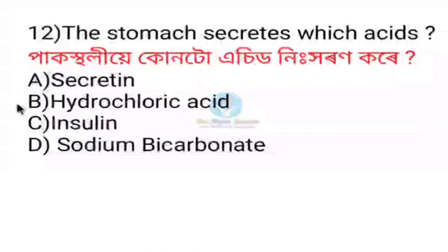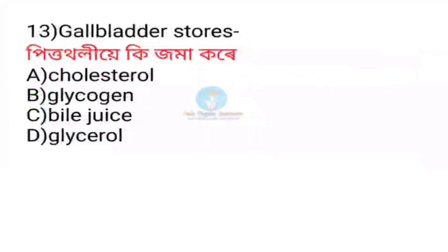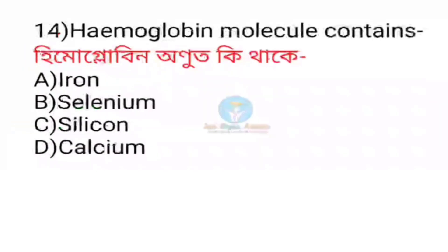The stomach secretes hydrochloric acid. The gallbladder stores bile juice. This is hydrochloric acid. Hemoglobin molecule contains iron.